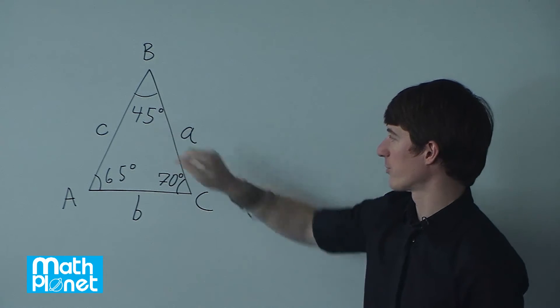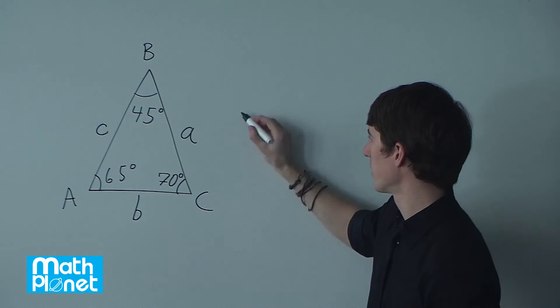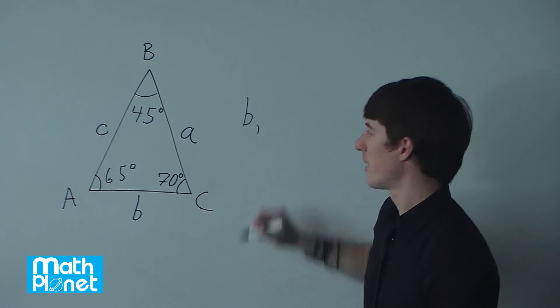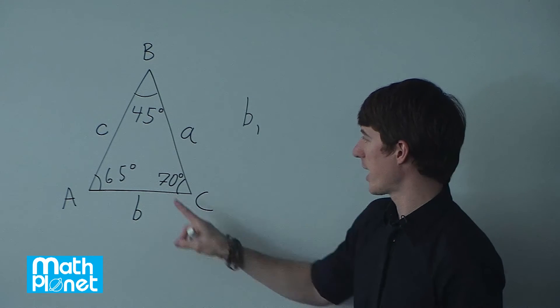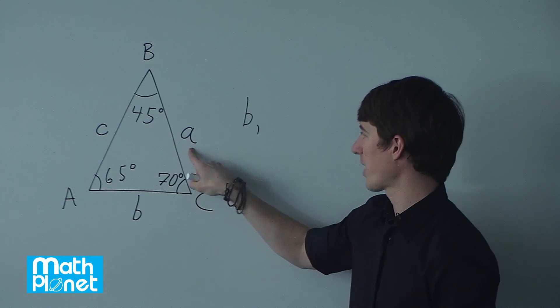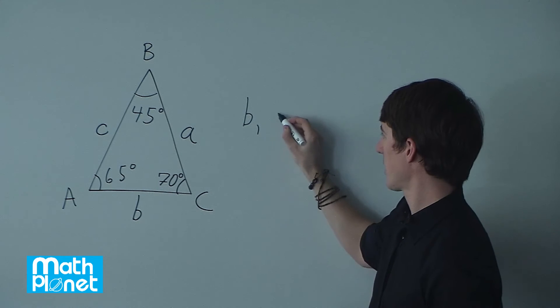So the smallest angle is 45, so the shortest side is b. The second smallest angle is A, so the second shortest side is a.